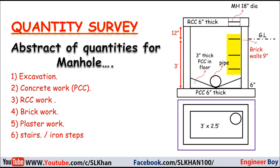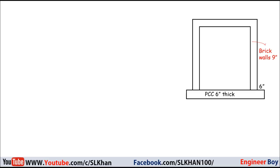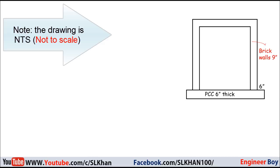Before going into the details, let me assume a sketch of the manhole. The base of PCC is 6 inches thick, the brick wall is 9 inches thick, and we have an RCC slab which is also 6 inches thick. The slab has a manhole opening with a diameter of 18 inches.